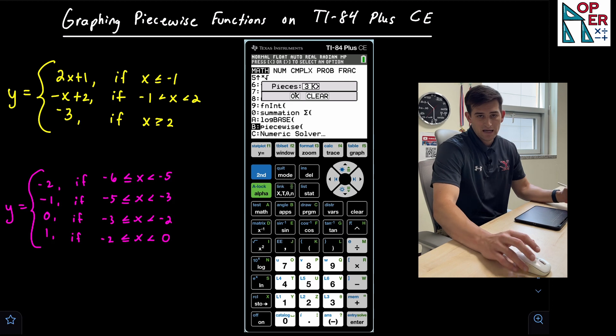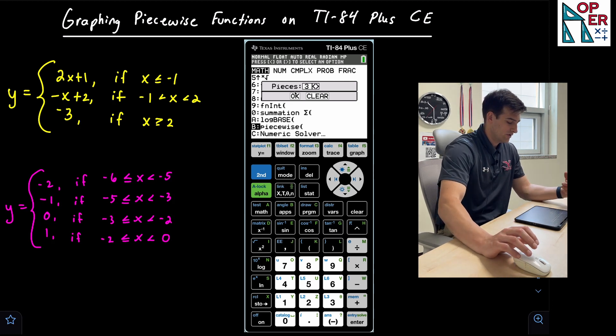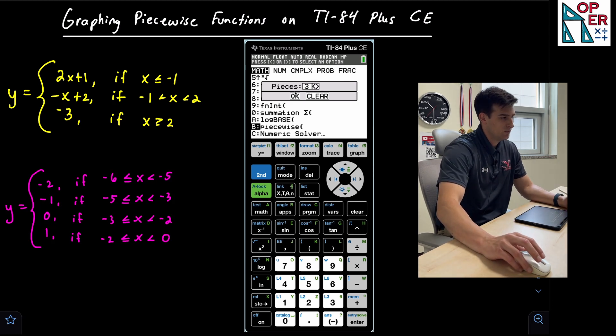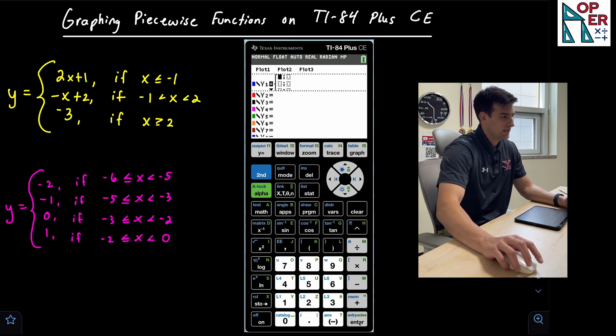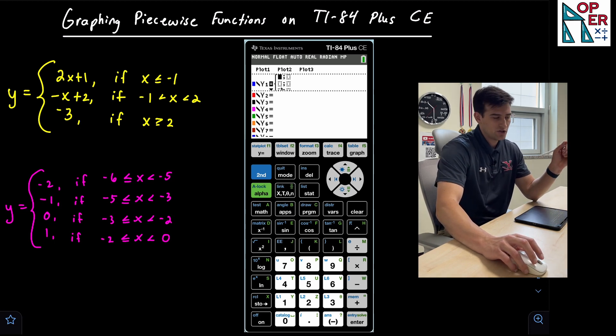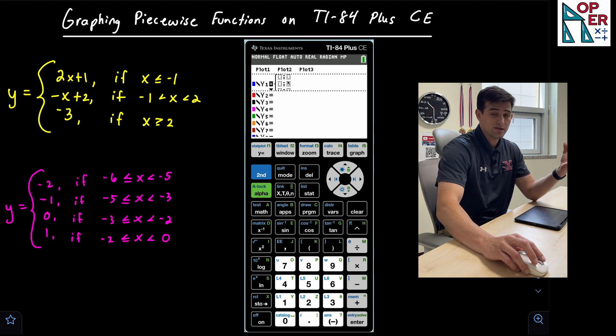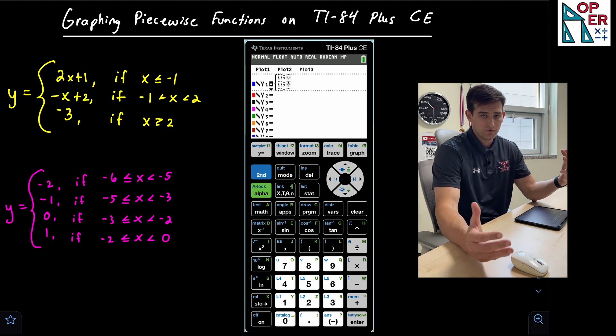Now here, it's gonna give us a menu that asks us how many pieces we have. So for our first piecewise function in yellow, we have three pieces. So we can just leave that at three, go down to okay and hit enter. Now it gives us this template here that we can fill in. So these dotted boxes on the left is where we're gonna type in the function. And then on the right of the semicolon is where we're gonna type in the domain restriction.